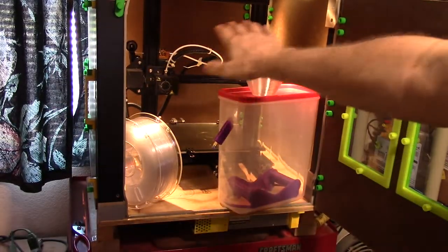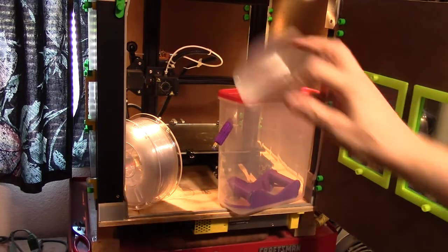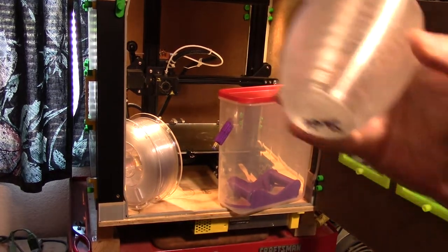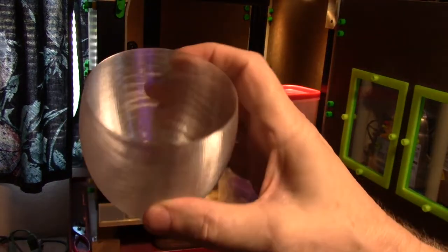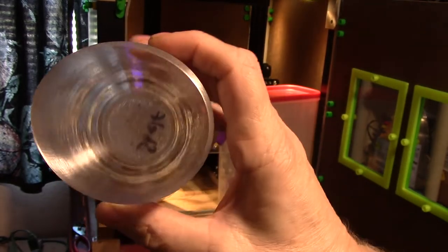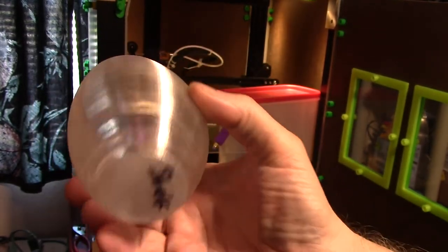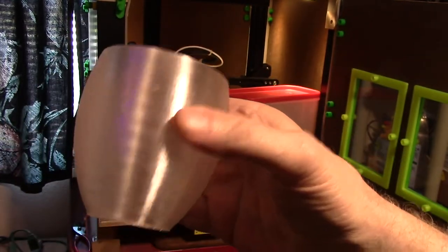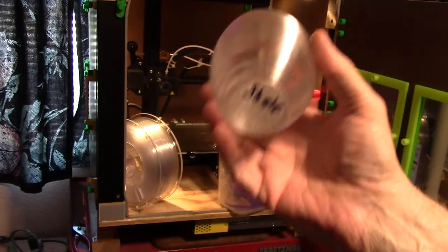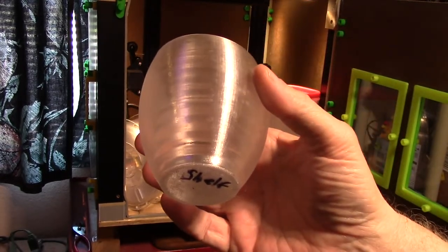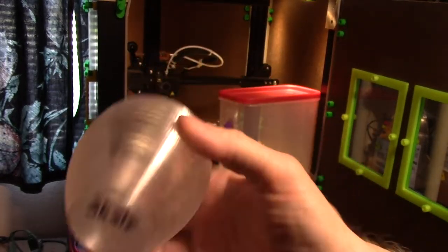I have an enclosed and modified Ender 3 that will print the polycarbonate at the correct temperatures. I have this model I got from Thingiverse and I have printed it as a candle holder in vase mode. This is the one I printed with the filament that came open on the shelf, been sitting on the shelf open for four or five days at about 30% humidity. It's not a bad print.